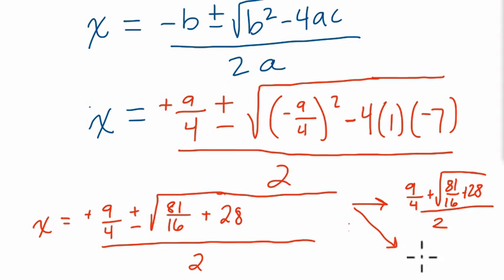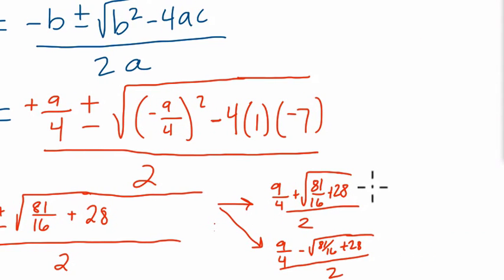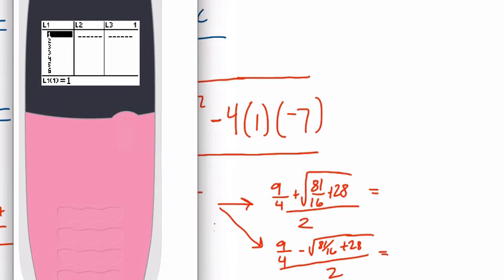And the other one is where we'll have nine-fourths minus, because it's plus or minus, the square root of 81 sixteenths plus 28 over 2. And then we scroll to the right. And this is good practice, because sometimes you'll have problems like this that aren't multiple choice. So you want to really get familiar with the quadratic formula.